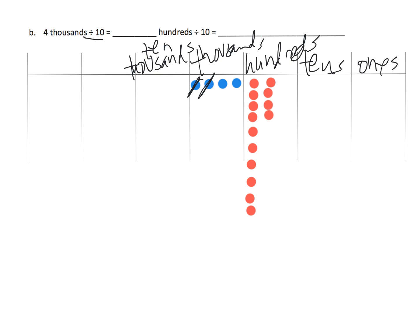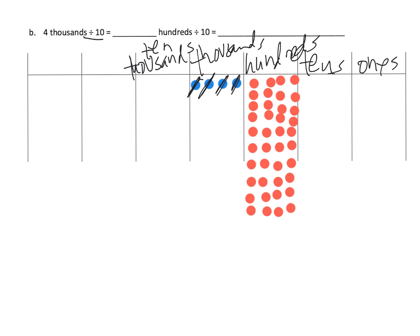Each of the four thousands dots gets cashed in for ten dots in the hundreds column — so one through ten for each. We do this for all four dots. So now what do we end up with? We end up with 40 hundreds.